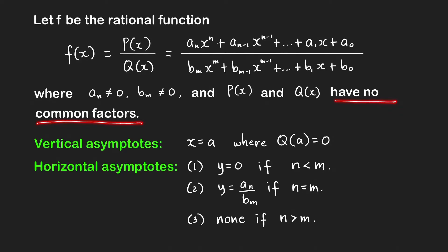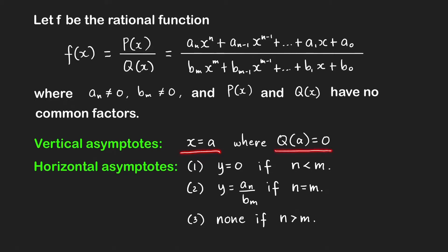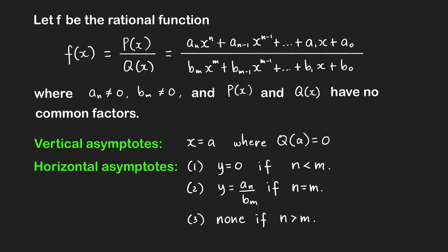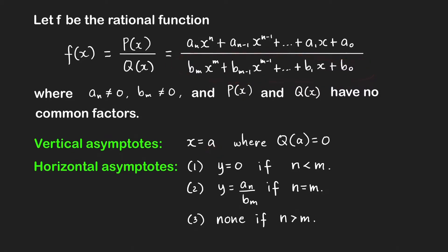To find vertical asymptotes, the vertical asymptotes are the lines x equals a, where q of a equals zero, meaning a is a zero of the polynomial q of x. So if we know there are no common factors between numerator and denominator, all we need to do is find the values of x that make the denominator zero. If a makes the denominator zero, then the vertical line x equals a is a vertical asymptote of f.